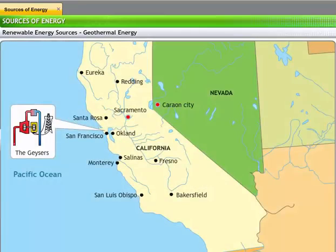The world's largest geothermal power plant, the Geysers in California, USA, has been in operation since 1924.